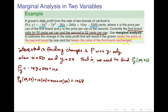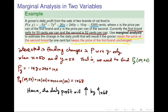Now if we plug in x equals 50 and y equals 52 into the above equation, we get 1468. This means that the daily profit will increase by 1468 cents. It's increasing because the result is positive. This concludes the question. Thank you.